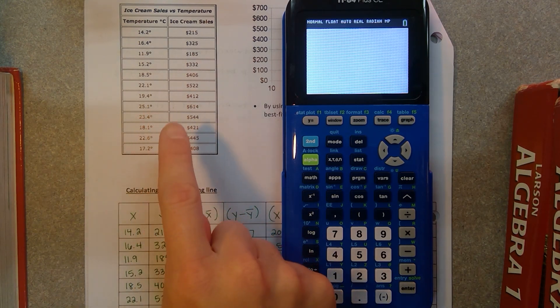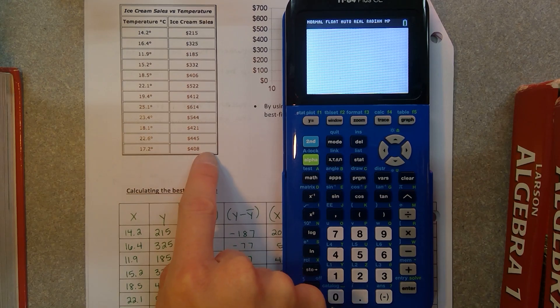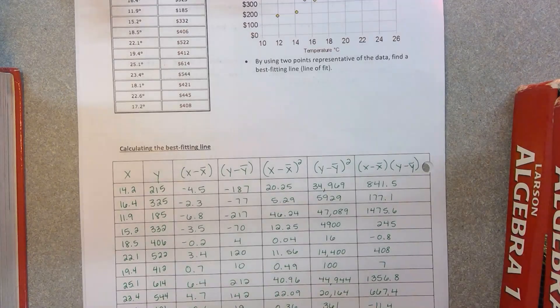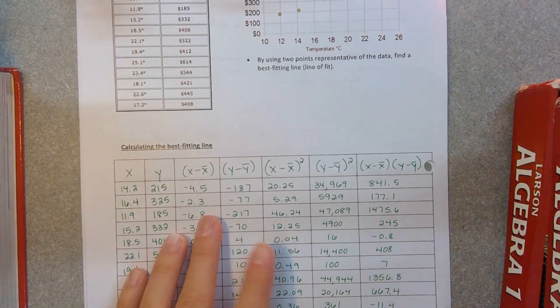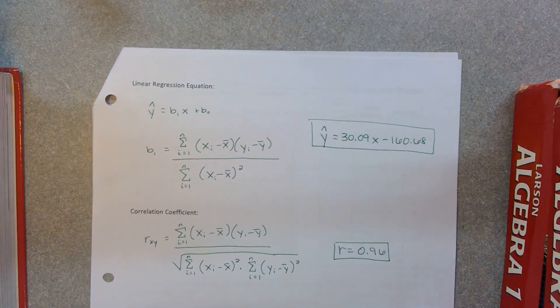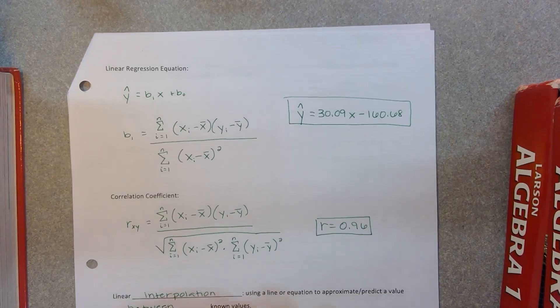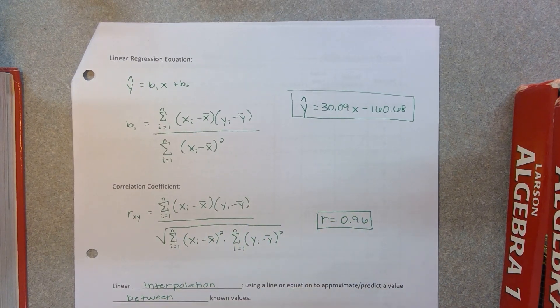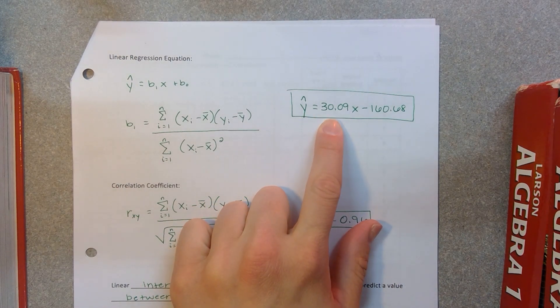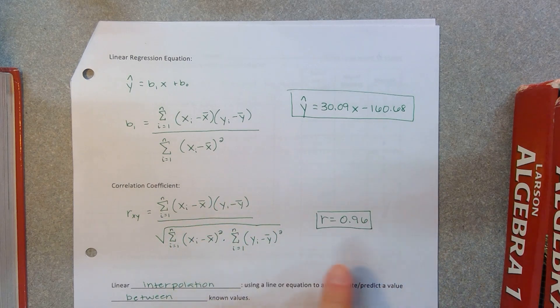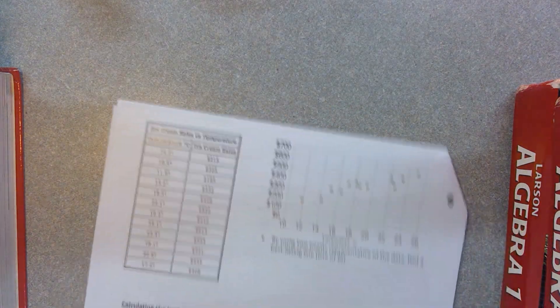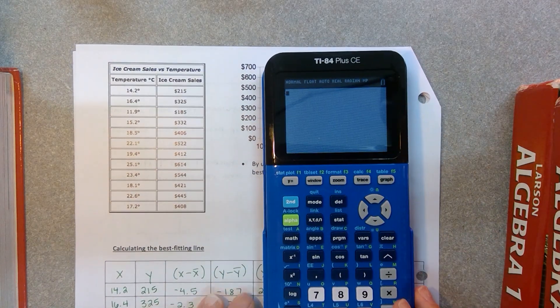So if you recall, we had our temperature and ice cream sales, and then we said it was a strong positive correlation. We were given a graph of it, we filled out this giant chart, and then we had these crazy equations to come up with the equation of the linear regression and then also our R value. And so our slope said that we earned $30 for every 1 degree in Celsius that the temperature rose. Very strong positive correlation. So what we're going to do today is make our calculator do the work for us.